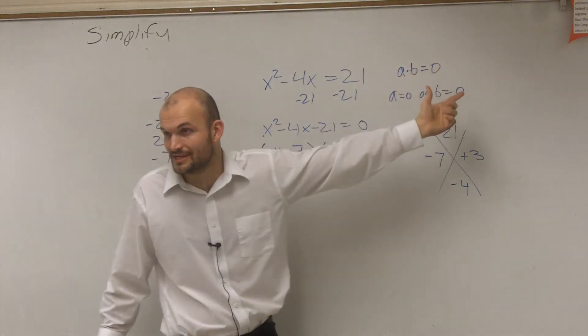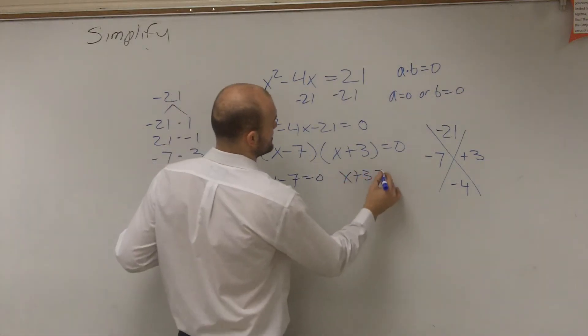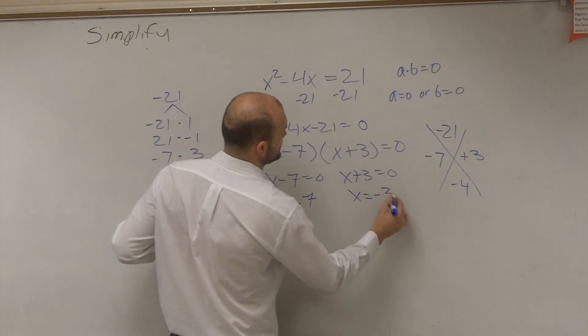When you have a product equal to 0, you can now say x minus 7 equals 0 and x plus 3 equals 0. Therefore, x equals 7, x equals negative 3.